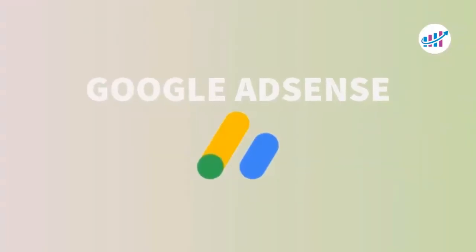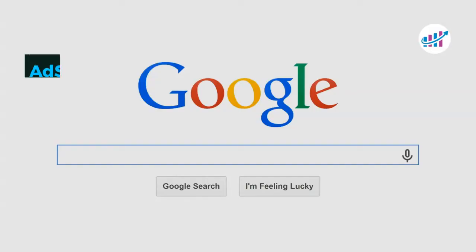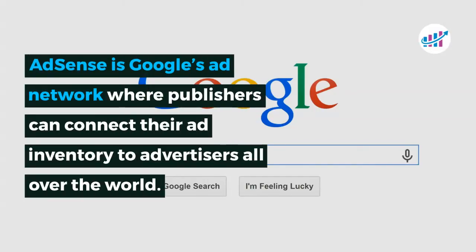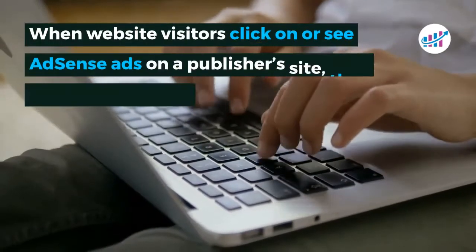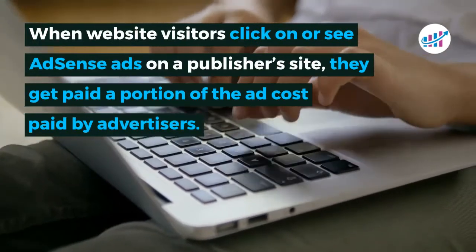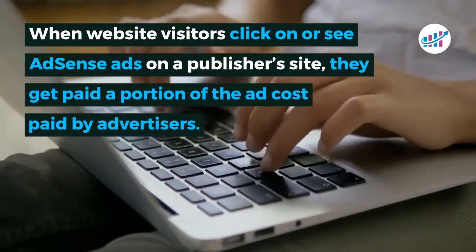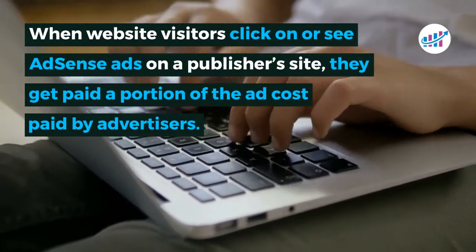Google AdSense is Google's ad network where publishers can connect their ad inventory to advertisers all over the world. When website visitors click on or see an AdSense ad on a publisher's site, they get paid a portion of the ad cost paid by advertisers.